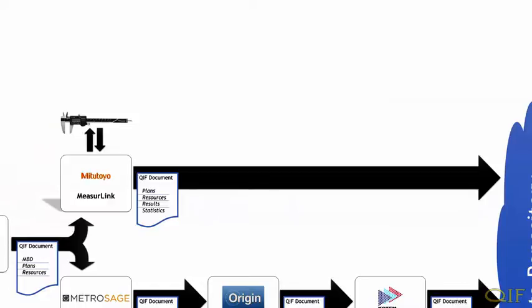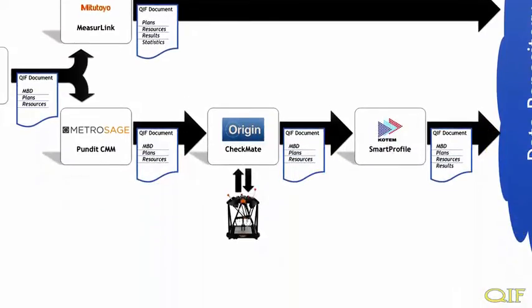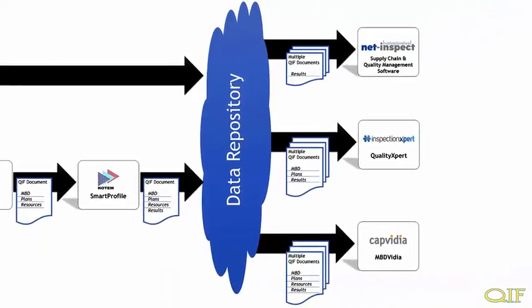Caliper measurements are carried out, and a CMM workflow is carried out. After all of this, we have a QIF MBD model, QIF plan data, and a set of QIF results data. This data can now be cross-referenced, analyzed, and visualized by a variety of software packages.